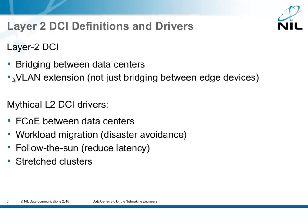Layer 2 Data Center Interconnect is bridging between data centers. Some people confuse this with just using a bridged service to connect data centers. If you're using VPLS from the service provider and you put your routers to it and then route or run MPLS VPN between your data centers, this is not Layer 2 Interconnect. Layer 2 Interconnect is really a VLAN extension — if you have the same IP subnet in two data centers, then we are talking about Layer 2 Interconnect.